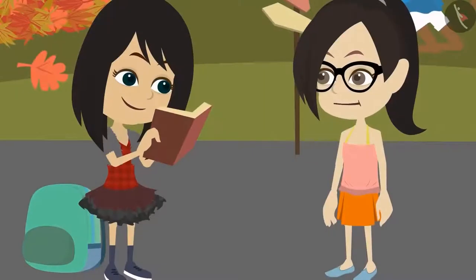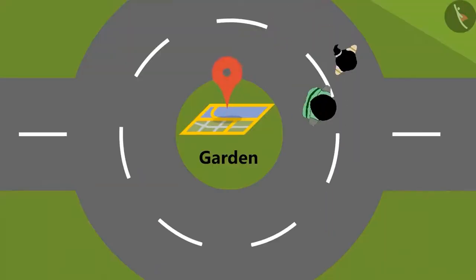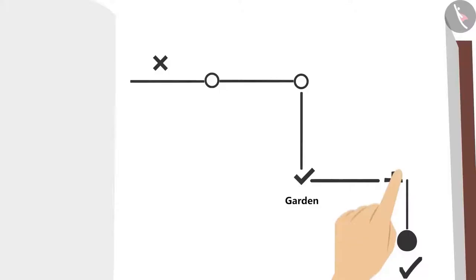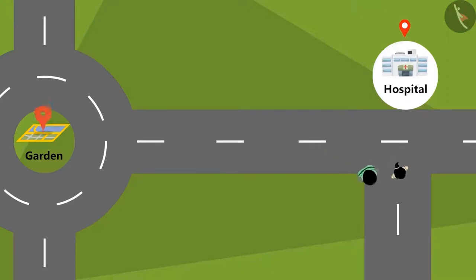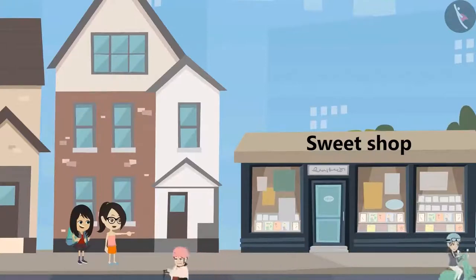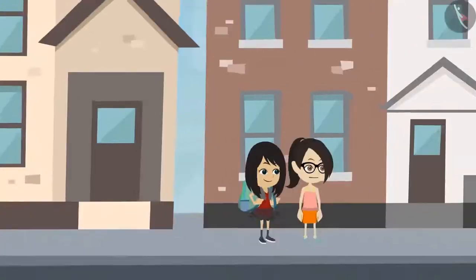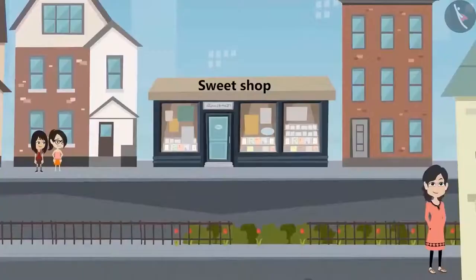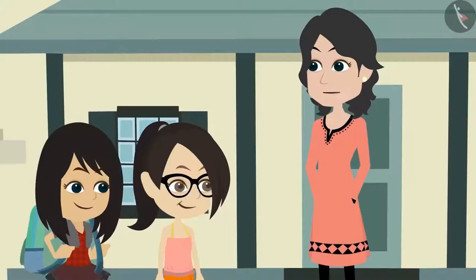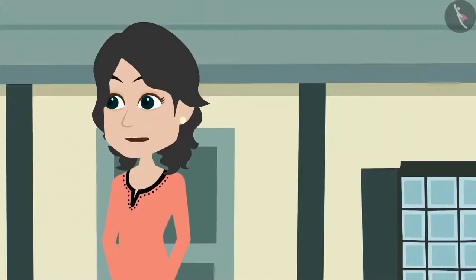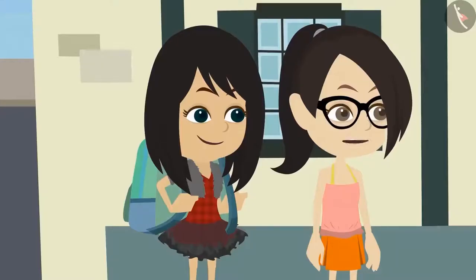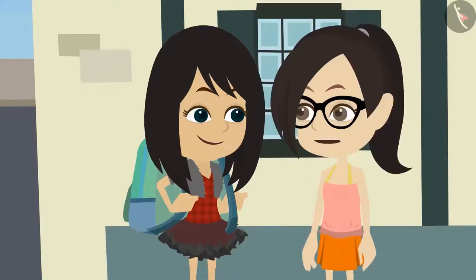Yes, now I got it. Let's go. Look, there is a hospital. According to this drawing, we should take a right turn. See, the sweet shop is there. Madam's house must be in front of the shop. Look, madam is standing there. Come on, Neha and Vandana, I was waiting for you both. Did you face any difficulty to reach here? We faced some difficulty in the beginning because we took the wrong turn, but then Neha made a drawing according to your directions. With the help of this, we reached your home easily.